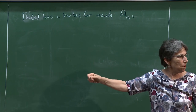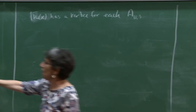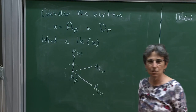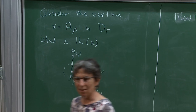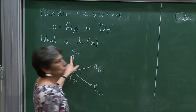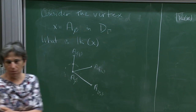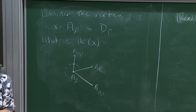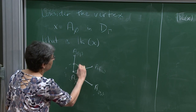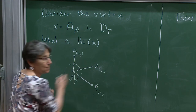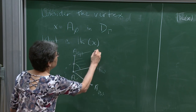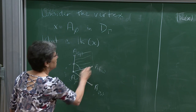So the link of X has a vertex for each s_i — each s_i gives me a vertex, namely the edge that goes to A(s_i). When are two of these joined by an edge in the link? It's when there's a cube there.